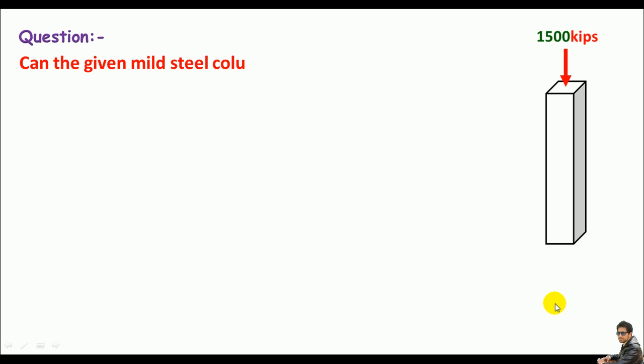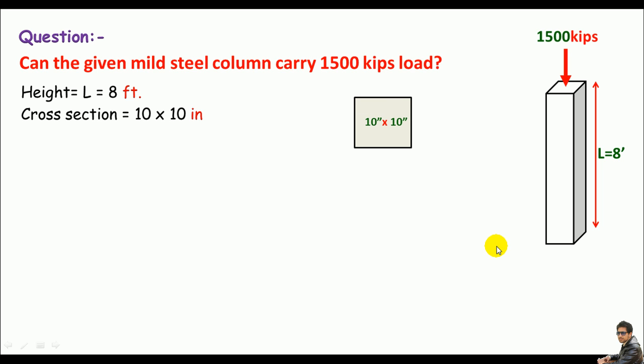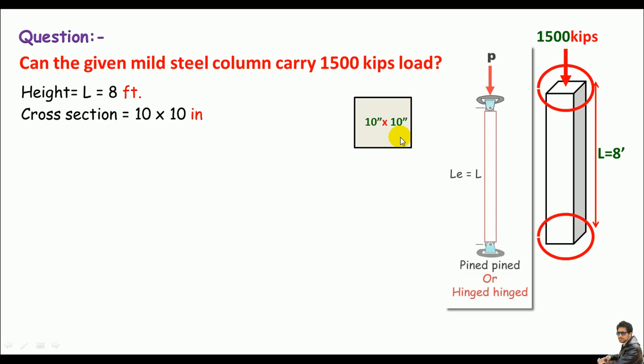A nice question was asked from a student about the given column. Can the given mild steel column carry 1500 kips load? The column is just 8 feet tall with a cross section of 10 by 10 inches. The data was not enough, so I asked about the end conditions. He said both ends of the given column are pinned or hinged.